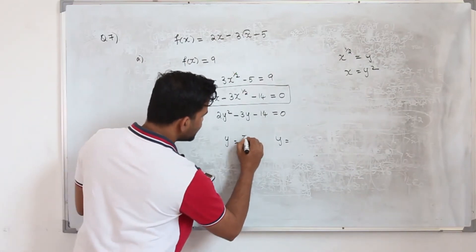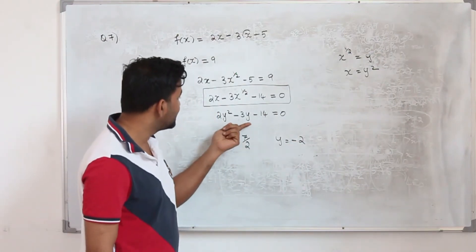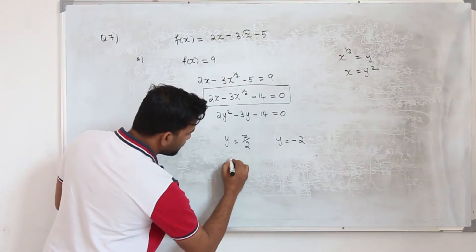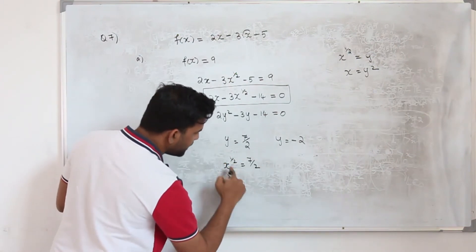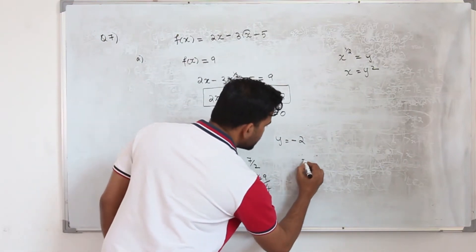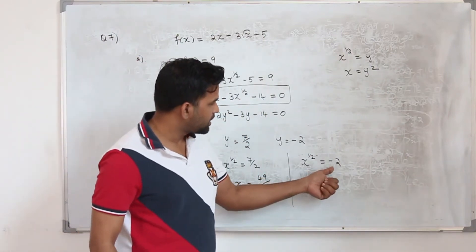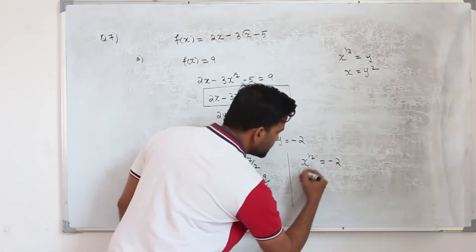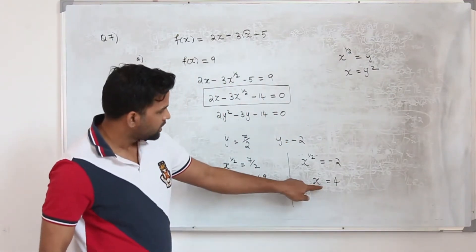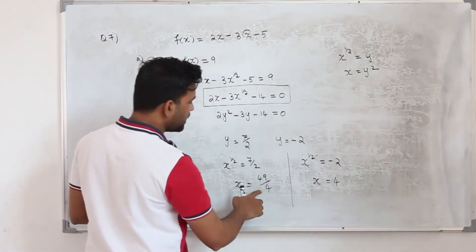We get two values: y equals 7/2 and y equals minus 2. Now replacing y by x^(1/2): for x^(1/2) equals 7/2, squaring gives x equals 49/4. For x^(1/2) equals minus 2, squaring gives x equals 4. However, this second solution needs to be checked — substituting x equals 4 into the original equation does not give 0.